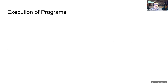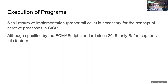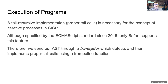The way we execute programs is not just to run them in the browser immediately. Because of our use of SICP, we require the ability to have proper tail calls, which is necessary for iterative processes in SICP. Although this is part of the ECMAScript standard since about 2015, only Safari supports this feature. So we have a transpiler that will detect and then implement proper tail calls using a trampoline function, and then we evaluate that program using the JavaScript engine of the browser.